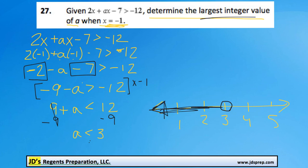What we need to find is the largest integer value of a. And we can see that the largest integer value is 2. It can't be 3 because it's not included, but 2 is. So a equals 2 would be our largest value.